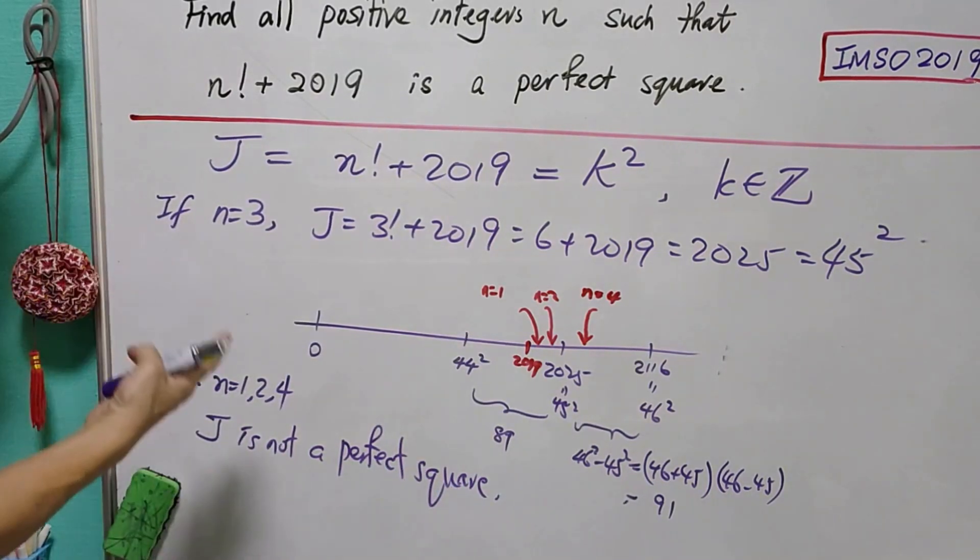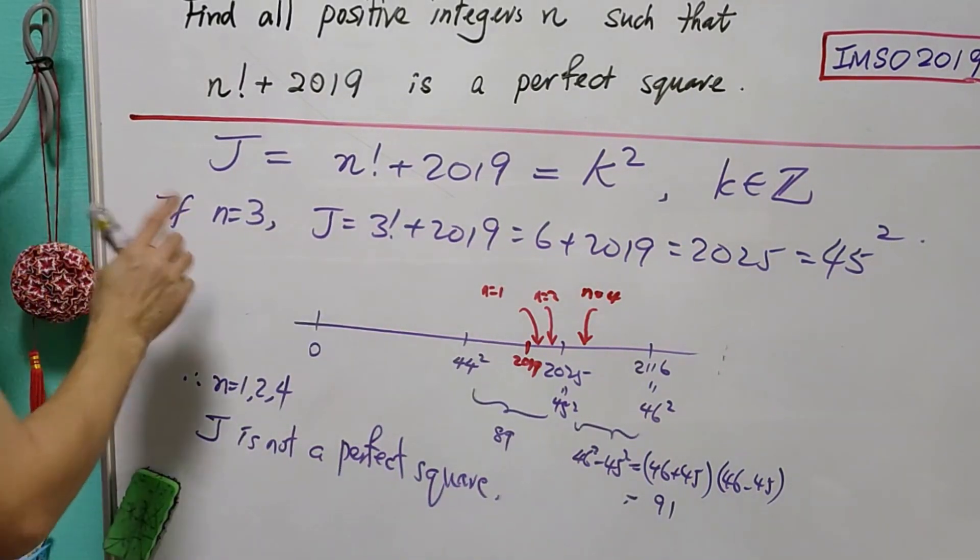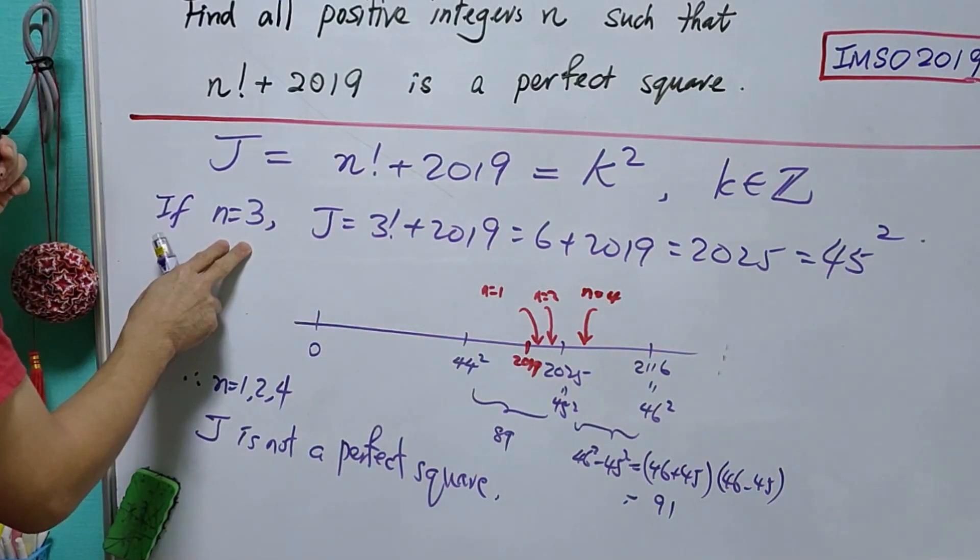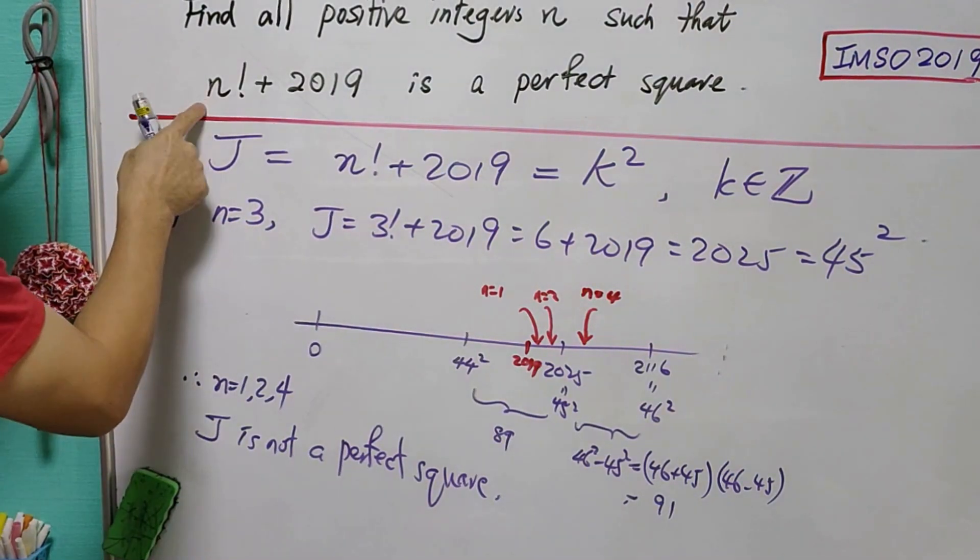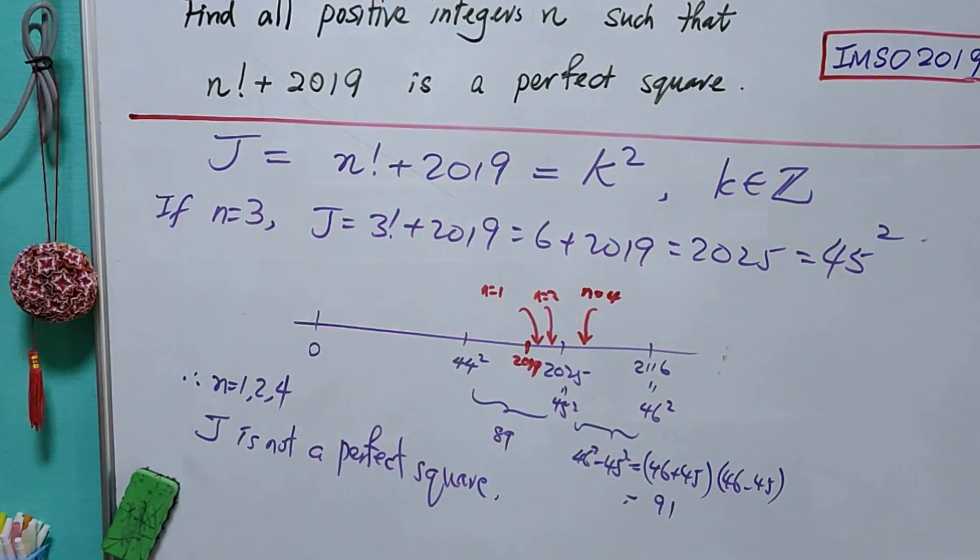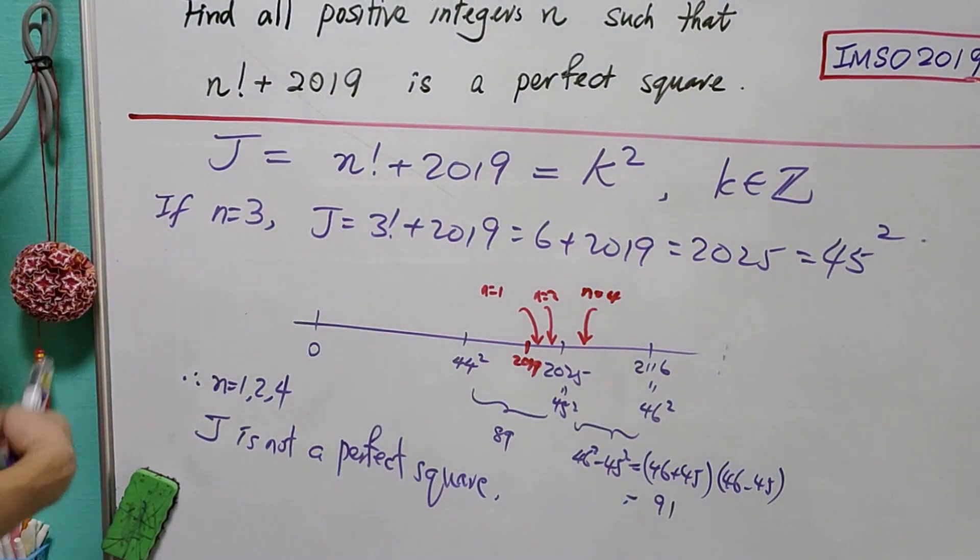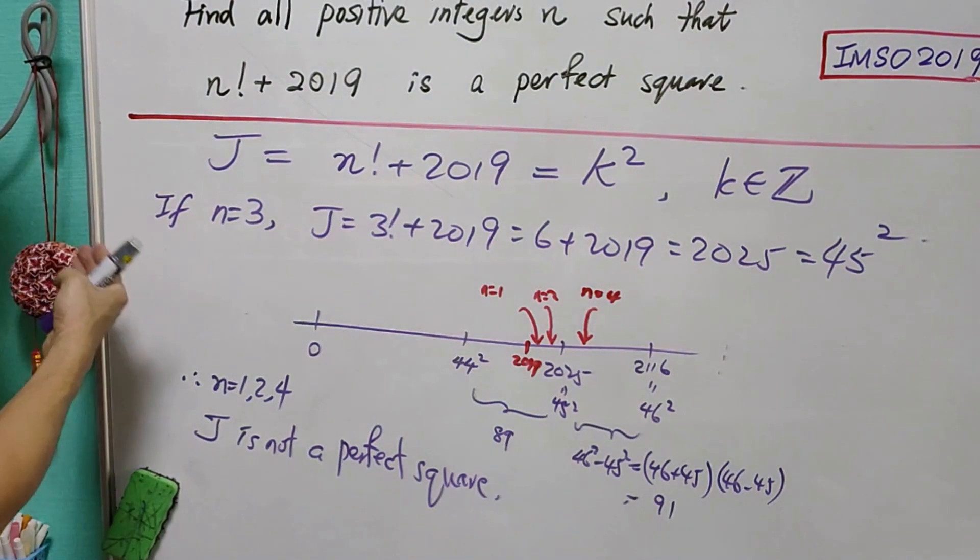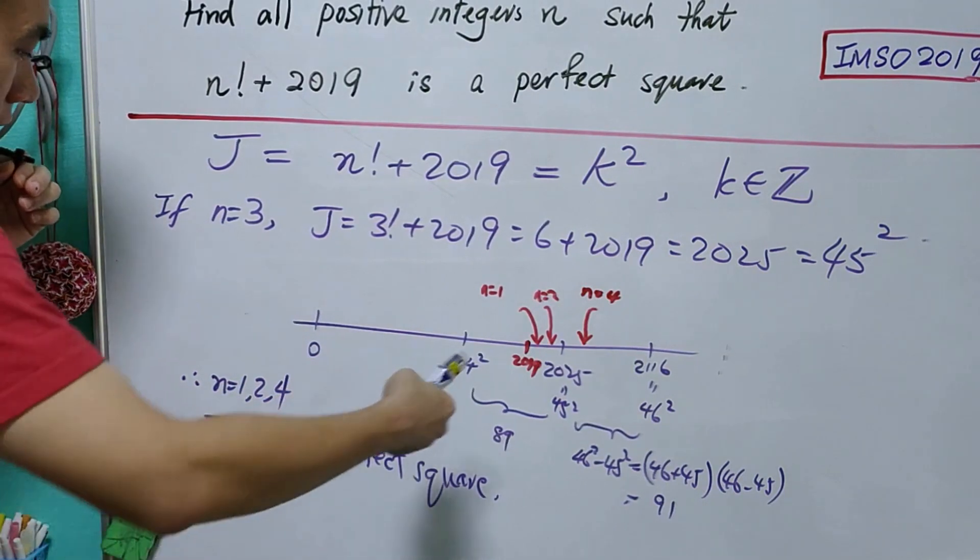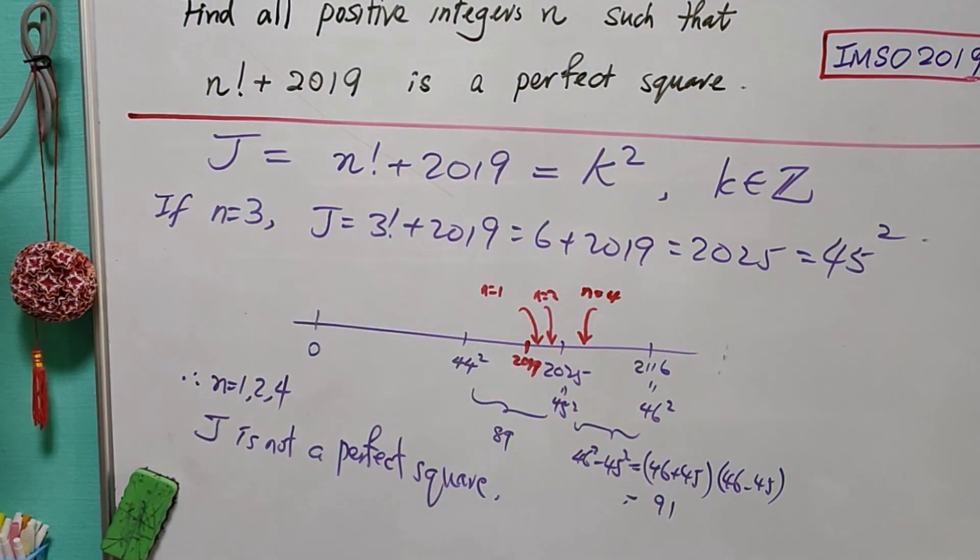Now, this is the interesting part of this question. We wish to show that n = 3 is the only value of n such that n! + 2019 is a perfect square. Of course, you cannot list out all the values of 5, 6, 7, 8, and so forth.